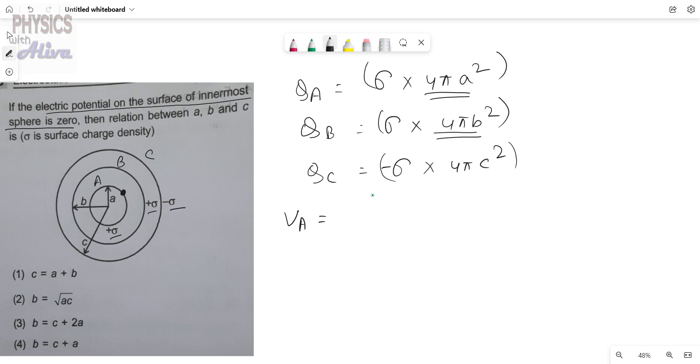Okay, now I am directly using this formula. This is the inside point for the sphere, for the sphere A. This is the surface point for the sphere A. So this will be Q_A divided by 4πε₀ and the radius of the sphere is A.